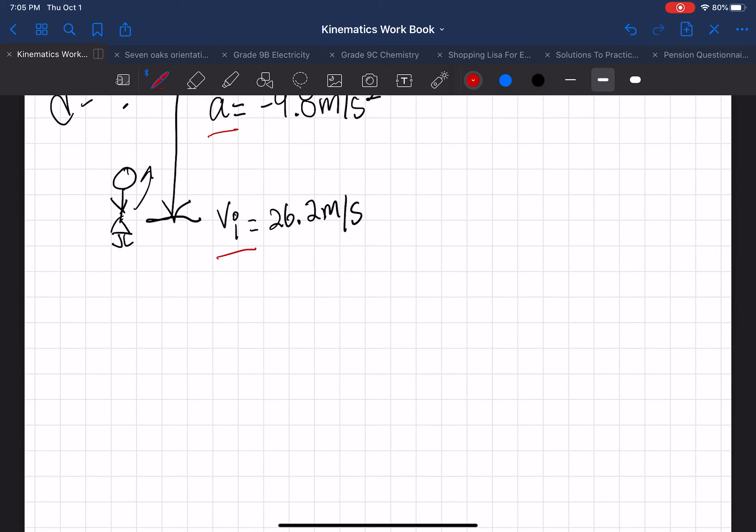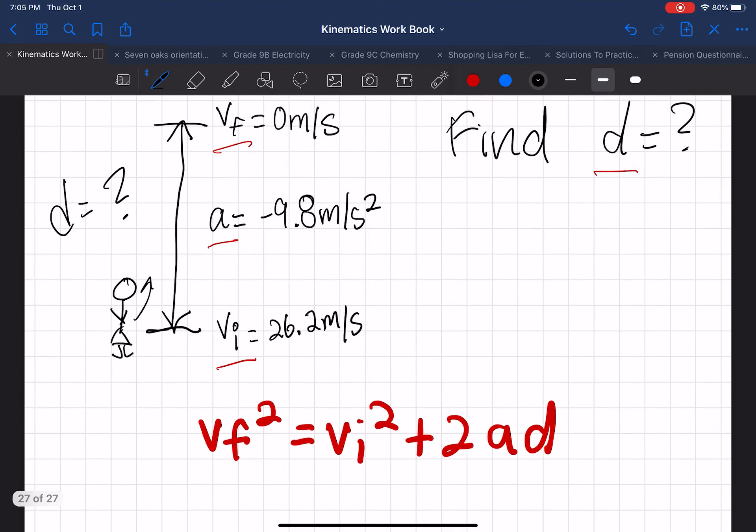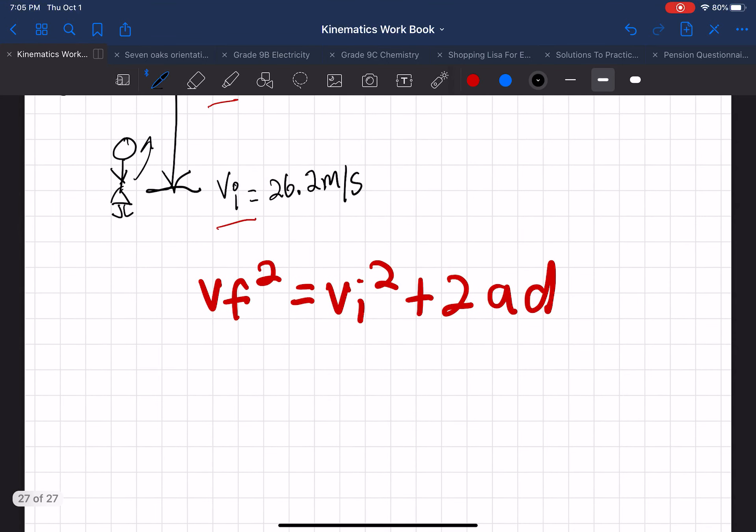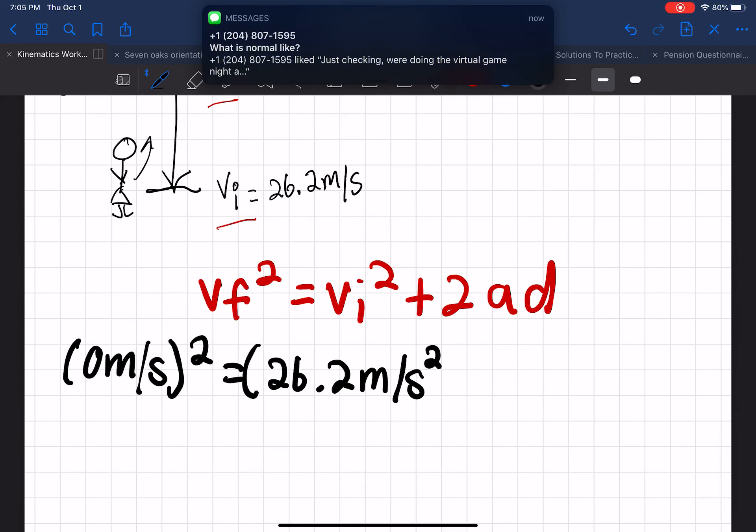Continuing on, let's write down that equation. So v_f squared equals v_i squared plus 2ad. Now we are going to fill in our numbers into this equation and solve for the missing variable. So again, 0 meters per second squared equals 26.2 meters per second squared, and then plus 2.